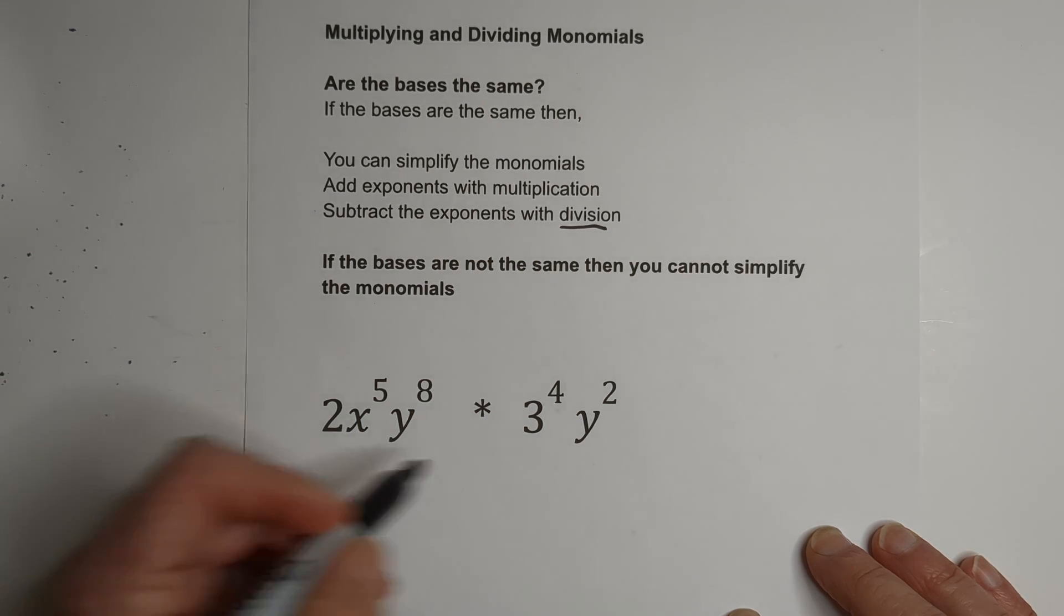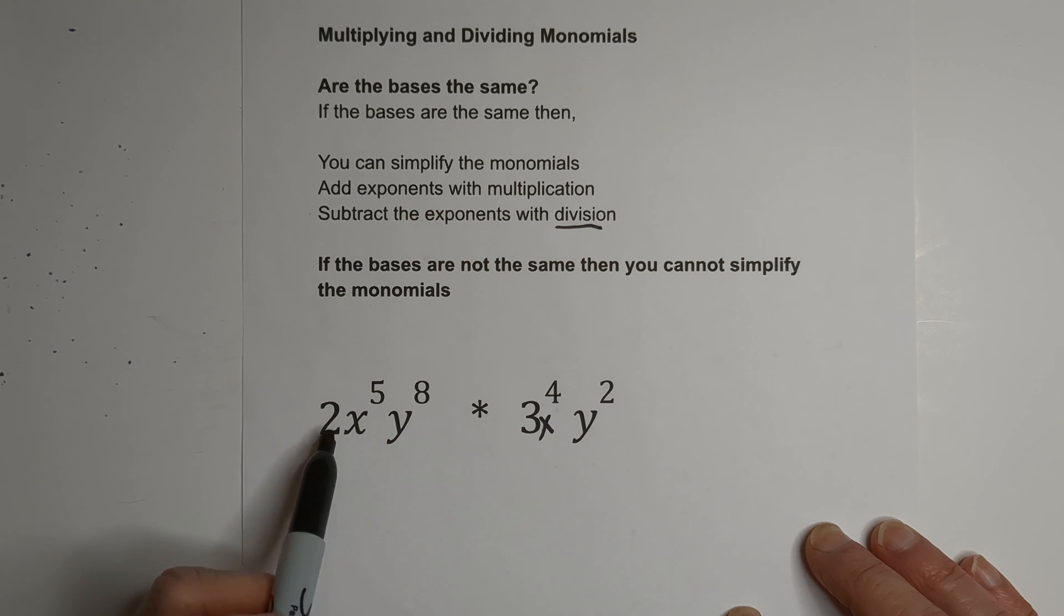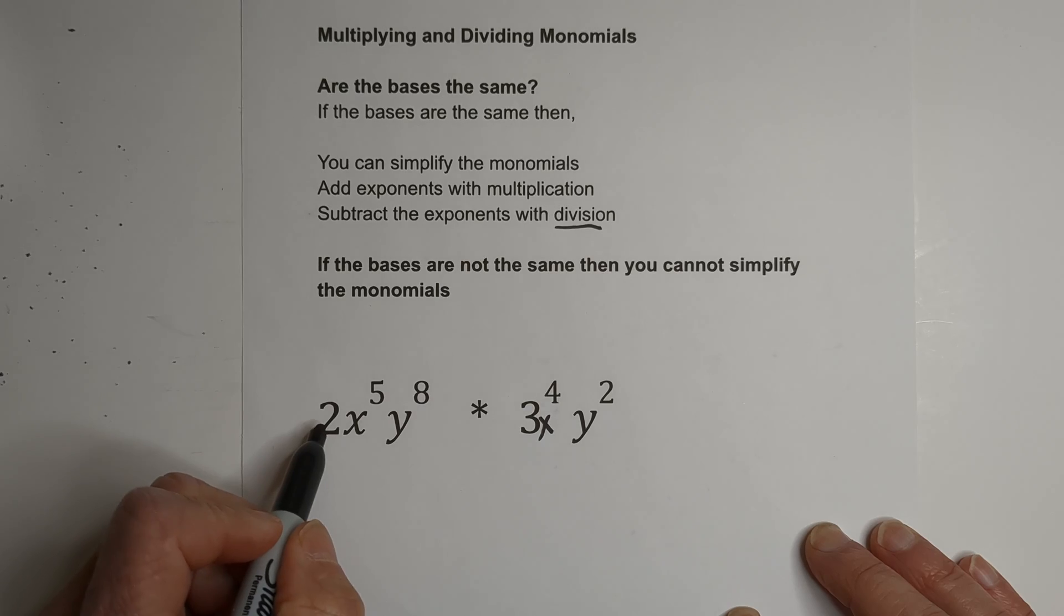So let's get started with this one. We have 2X to the 5th, Y to the 8th, times 3X to the 4th, Y to the 2nd. So the X's and the Y's we can combine. So let's go ahead and do that.